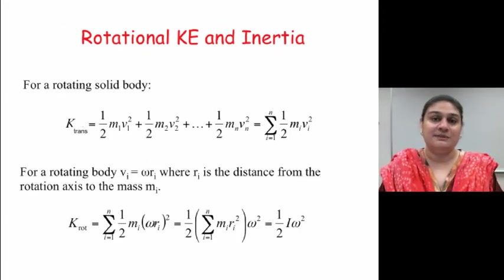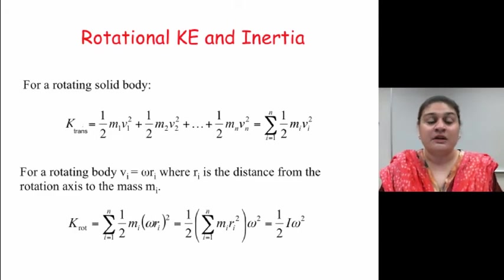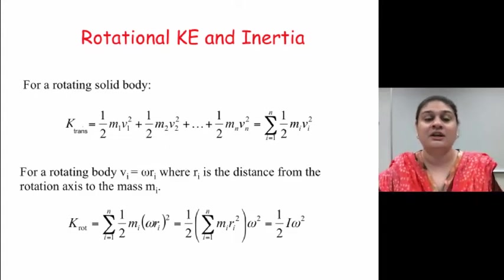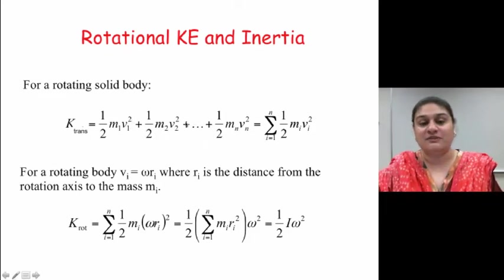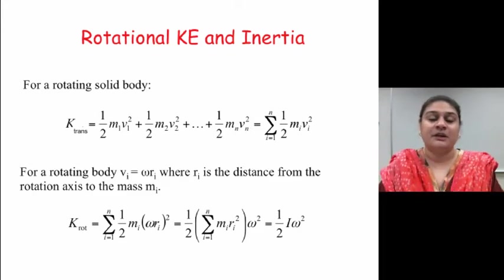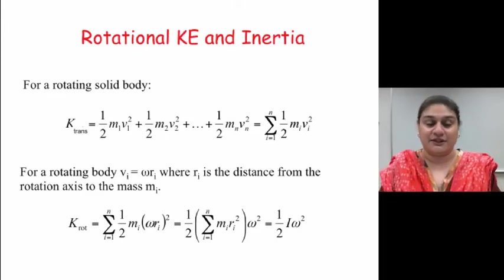One more thing that's going to make rotating objects different is the rotational kinetic energy. For a solid rotating body, if we were talking about kinetic energy, which is translational, means an object moving in a straight line, we will know it is half mv1 squared, half mv2 squared, half mv3 squared and so on if the object is composed of different small masses together.